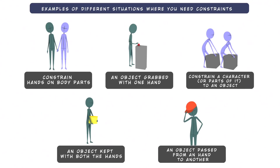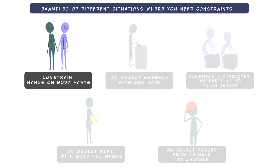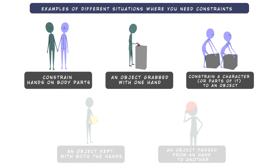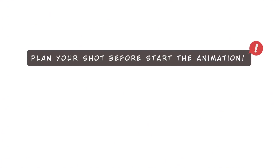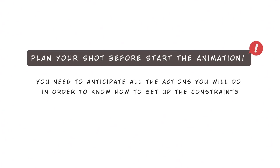Let's now see the different situations where you will need to constrain some objects. These are the situations we will analyze: constrain hands on body parts, an object grabbed with a hand, constrain a character or parts of it to an object, an object held with both hands, and an object passed from one hand to another. Before you start the animation and create the constraints, you have to plan the shot — do it in your mind or with sketches, because it's important to decide how to do the constraint and anticipate all the actions you will do with the constrained objects.